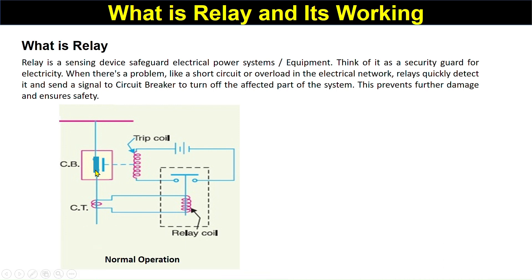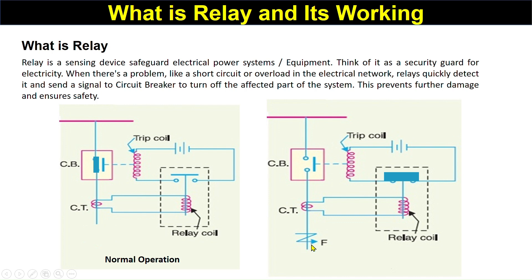Suppose when there is a fault here, the current through this will be very high. With this very high current, the secondary current of the CT is very high, greater than normal, and with this, it will pull down this plug. The relay will pull down this contact and it will close the circuit here.